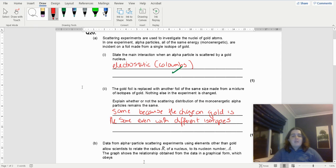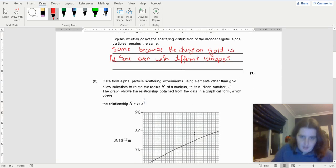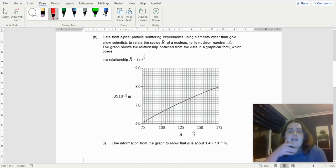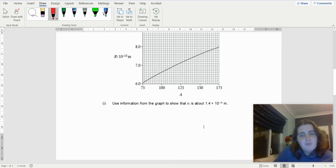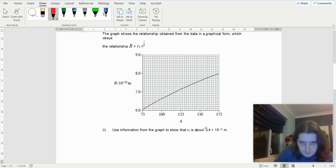So data from the alpha particle scattering is used on elements other than gold to relate R to the nuclear number A. This is the relationship. The relationship is R equals R₀A to the third. Use information from the graph to show that R₀ is approximately 1.4 × 10⁻¹⁵.